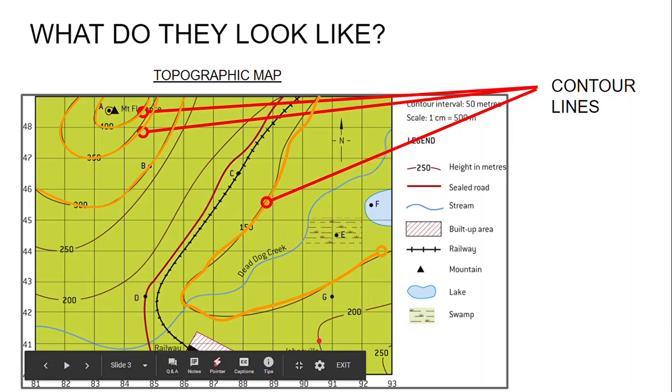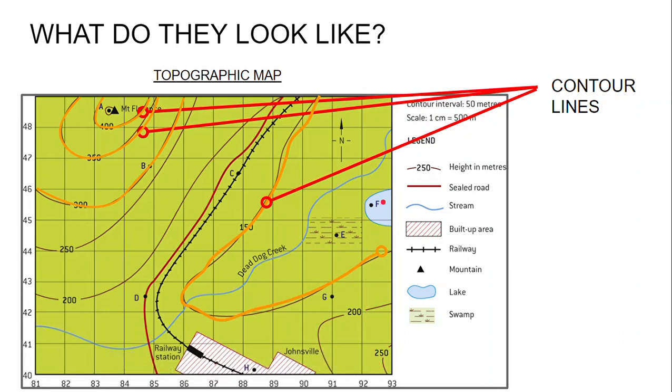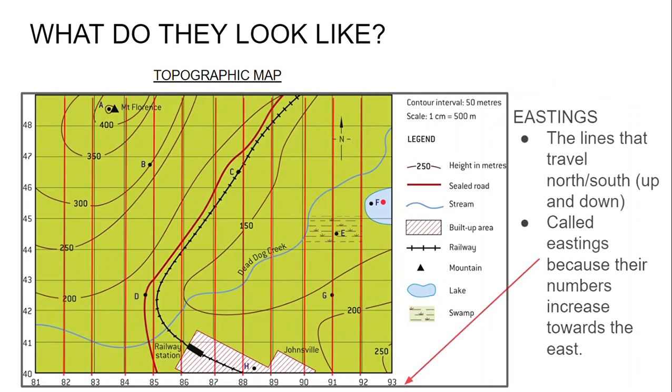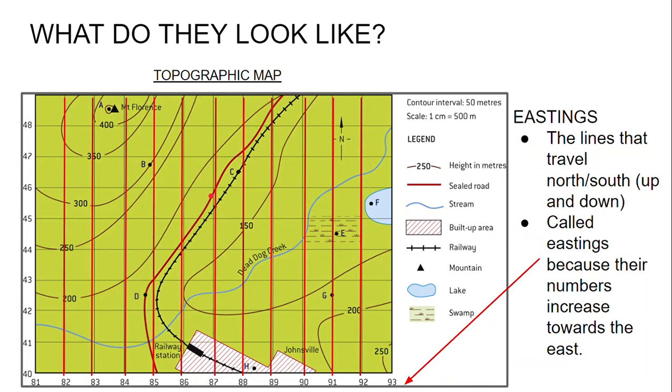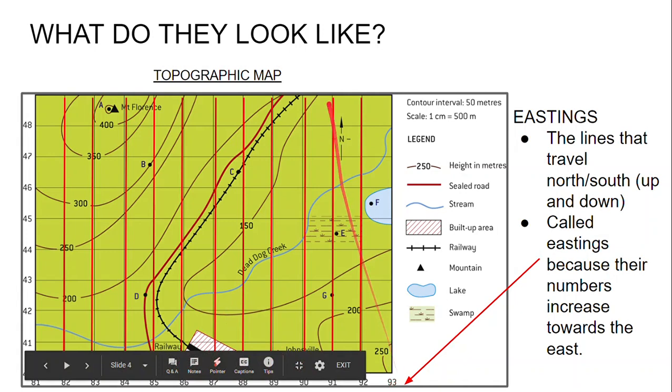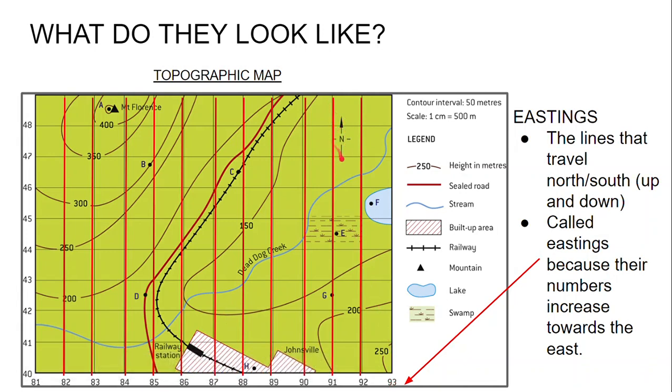Next, we have eastings. Eastings are the lines that travel up and down on a topographic map. I've marked them in red. We call them eastings because the numbers increase the further east we travel. So there's north, south, east, and west. You can see that the numbers increase from 81 right through to 93.